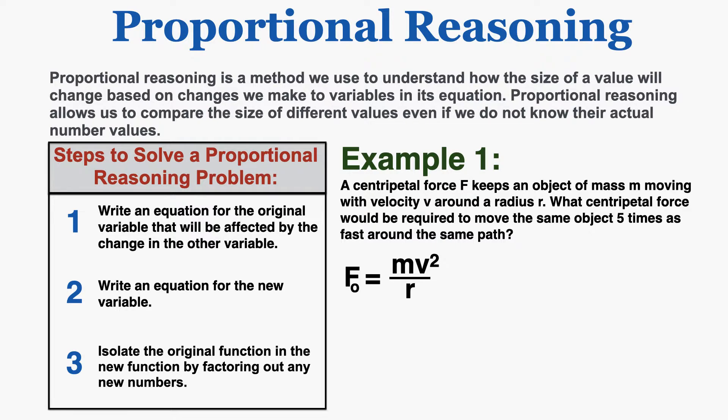Step two says to write an equation for the new variable. The new force is going to be equal to the same mass because it's the same object, and the same radius r because it's the same circular path. But we now have a new velocity — 5v instead of v — because we're trying to make the object move five times as fast. Because the velocity has to be squared and the new velocity is 5v, I have to make sure to square that full 5v in the equation.